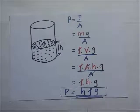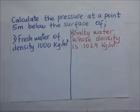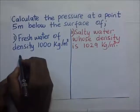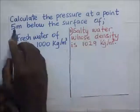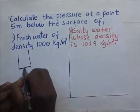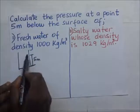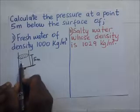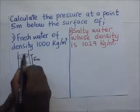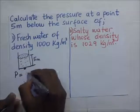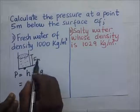The first example asks us to calculate the pressure at a point five meters below the surface of fresh water with a density of 1000 kg/m³. If this is the surface of the water, they want the pressure at a point five meters below that surface. To find the pressure, we use P = height times density times gravity, just as we derived. The height is five meters.